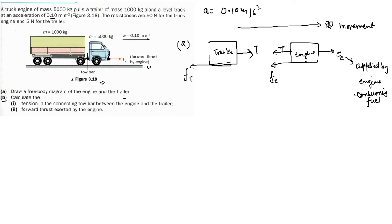Now for part B1: calculate the tension in the connecting bar between the engine and the trailer. Do we know the tension? No. Do we know the friction for the trailer? Yes — it is 5 N. The engine friction is 50 N. We need to figure out the tension.